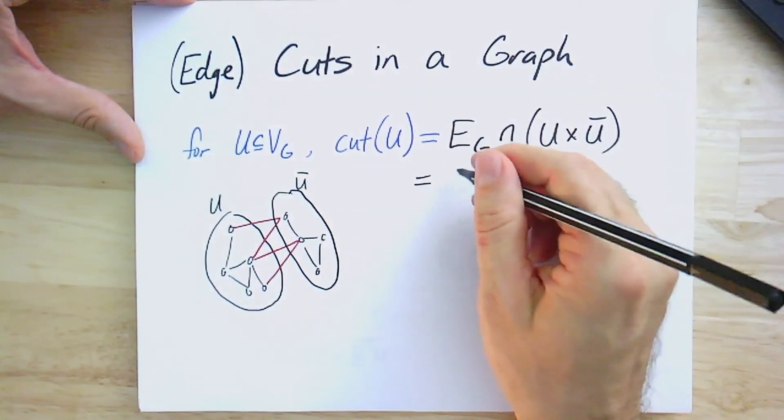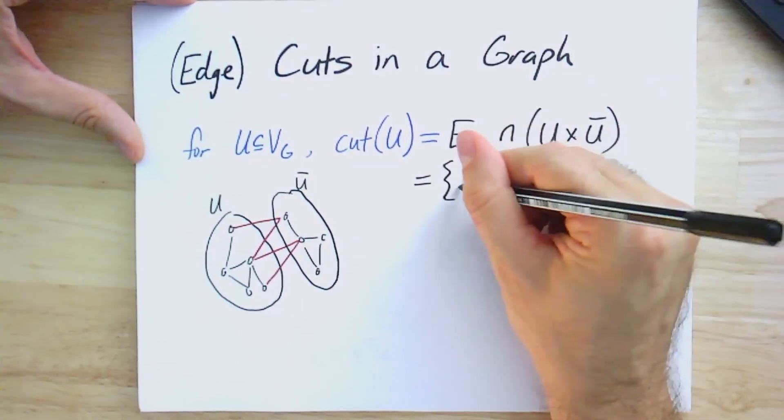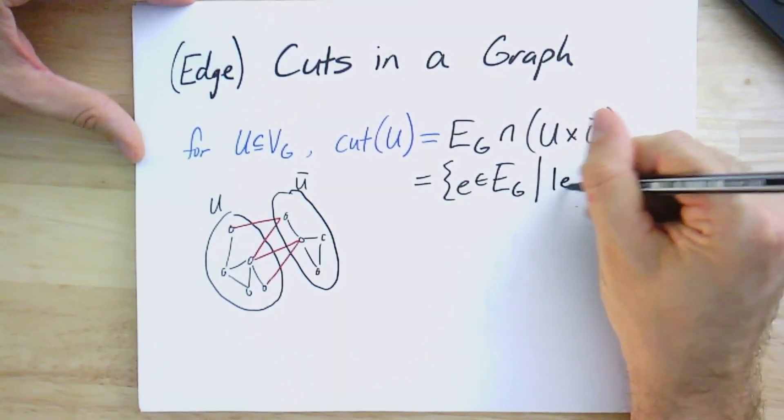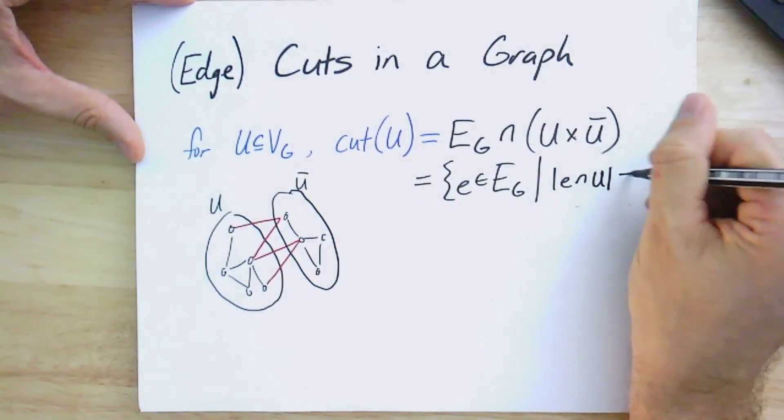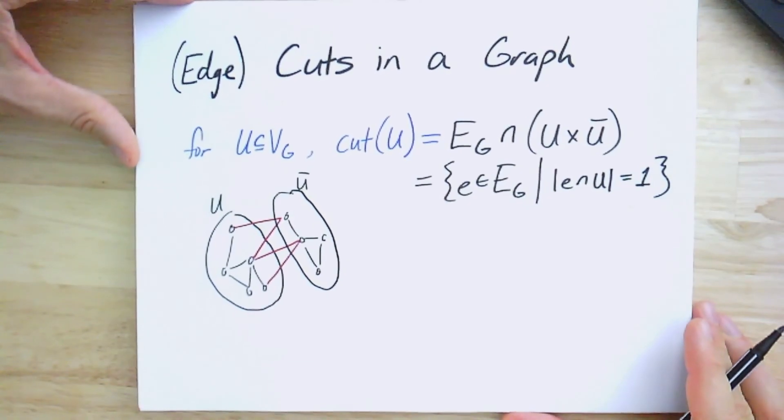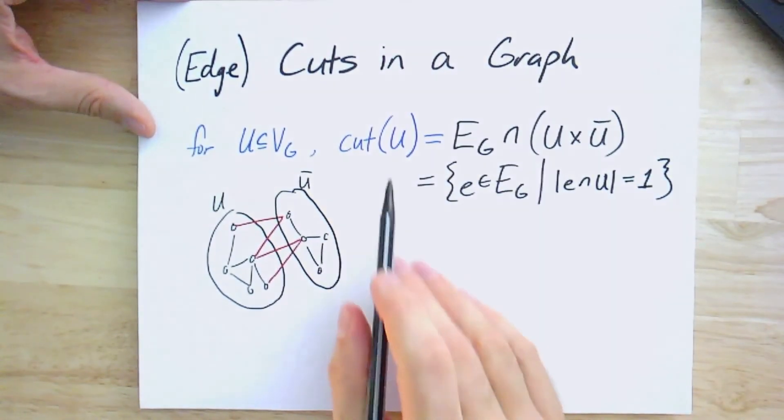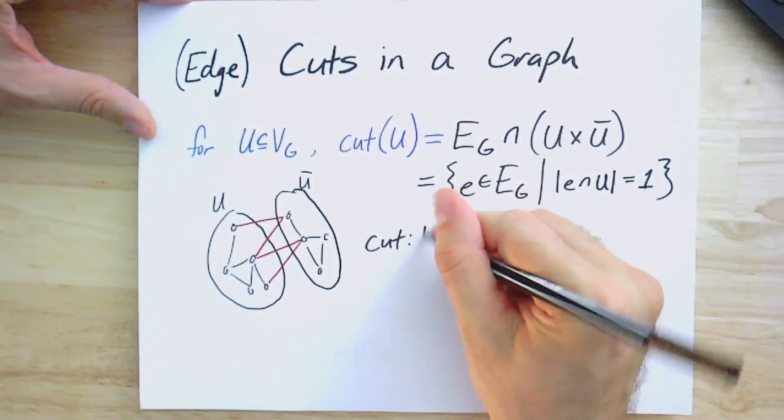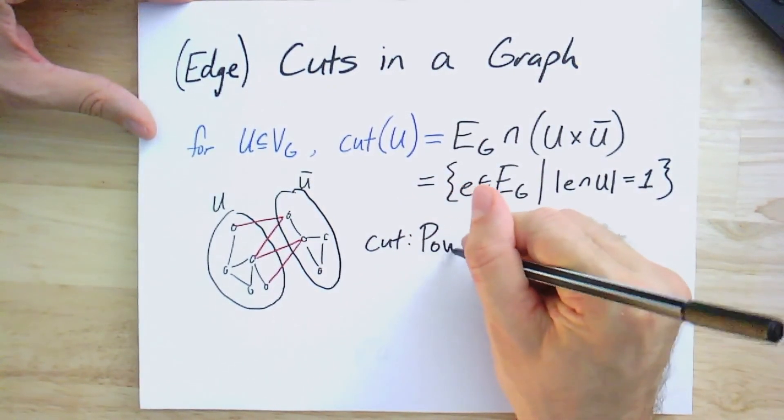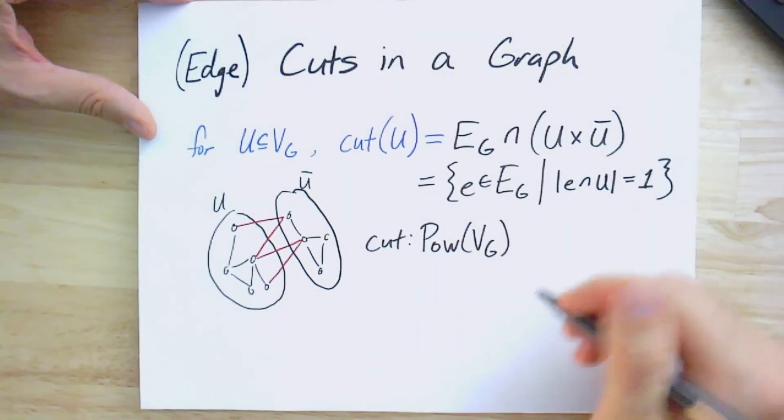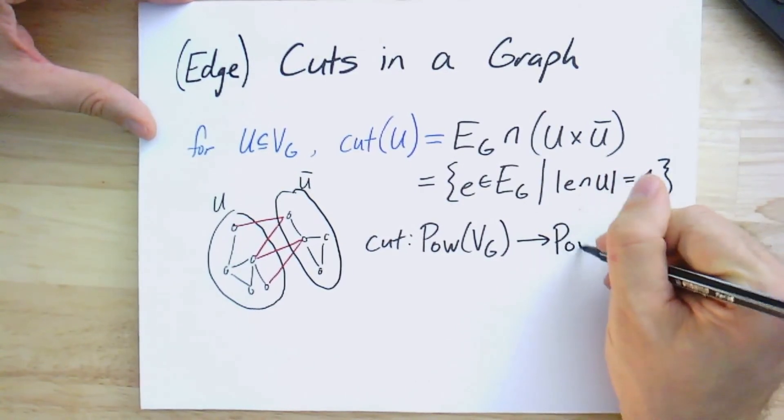Formally, we could write this as the edges intersected with U cross U complement. Or, if you like, you can think of this as the set of all edges in EG such that the size of E intersect U is 1, right? There's exactly one end of each edge in U. So this is a way to get a set of edges from a set of vertices. And so, as a function, you could think of it as a function from the power set of the vertices, that is, from a set of vertices to a set of edges.